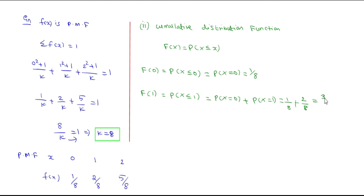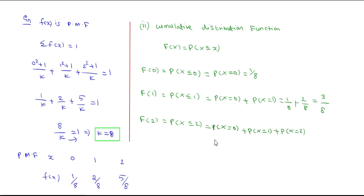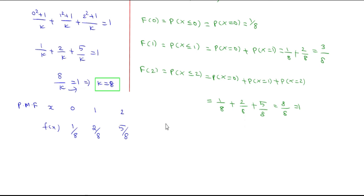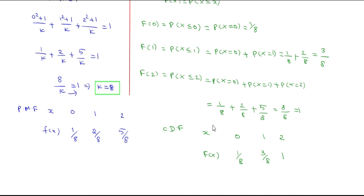F(1) = 1/8 + 2/8 = 3/8. F(2) = P(X ≤ 2) = P(X = 0) + P(X = 1) + P(X = 2) = 1/8 + 2/8 + 5/8 = 8/8 = 1. The cumulative distribution function table: x = 0 → F(x) = 1/8; x = 1 → F(x) = 3/8; x = 2 → F(x) = 1.